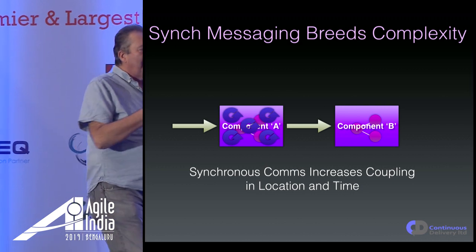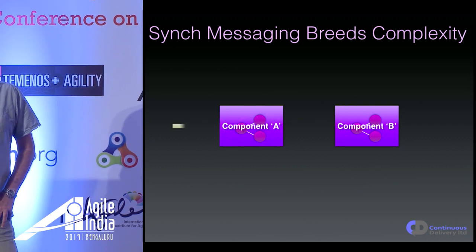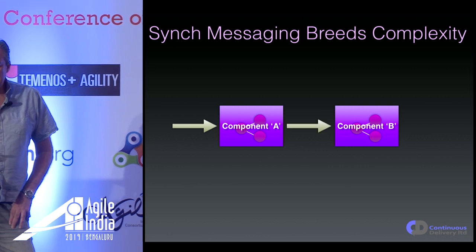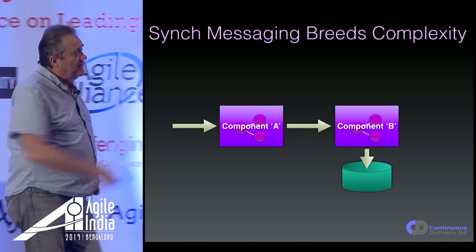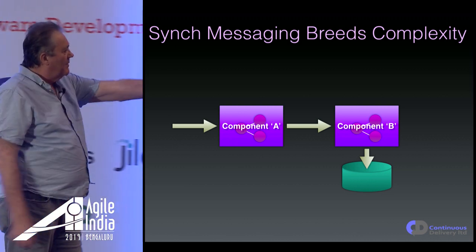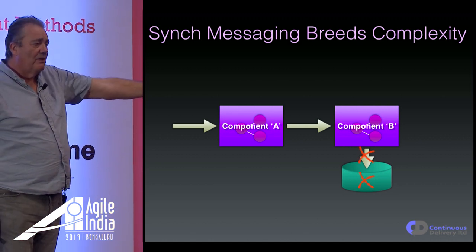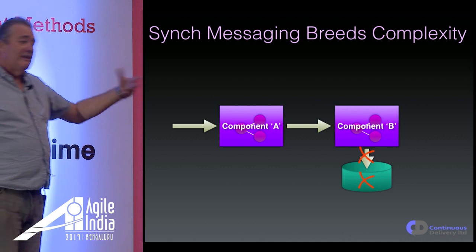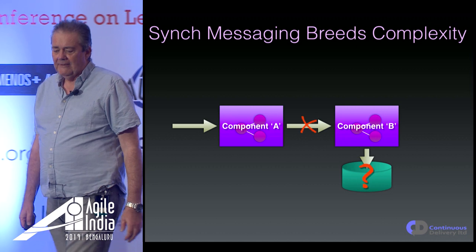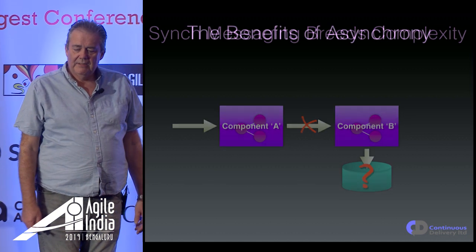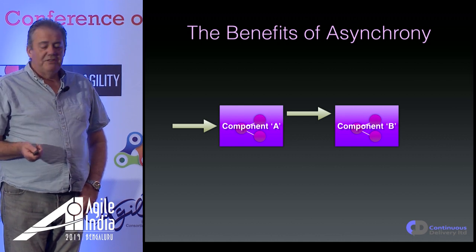Synchronous communications increases coupling in time and in location. So what could we do instead? We could start using asynchronous messaging. Instead of doing things synchronously and waiting for responses, we could run our logic on a single thread in each of these components — so there's no concurrency.